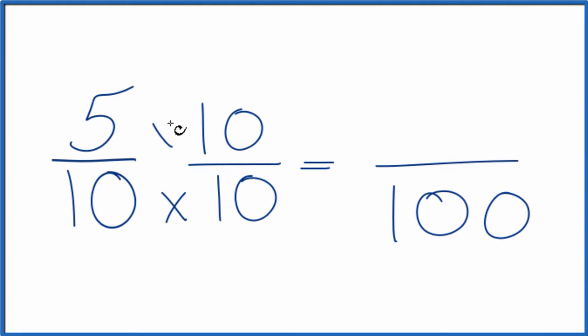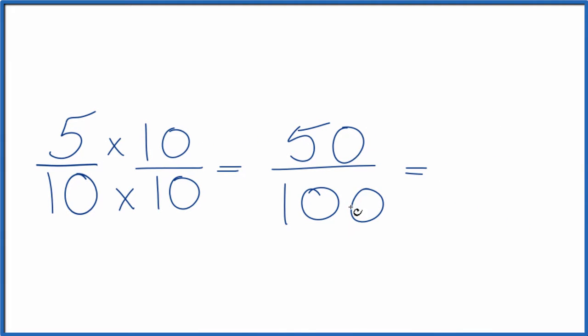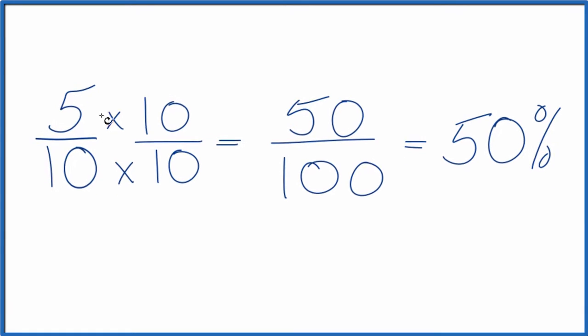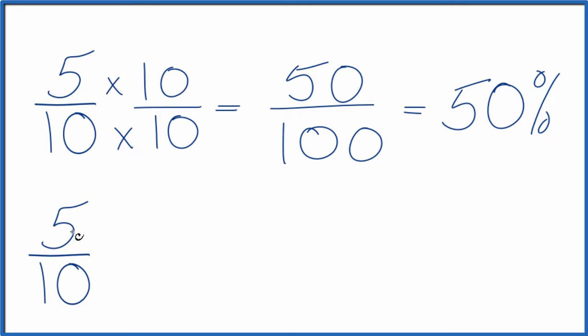5 times 10 is 50. So 5/10 and 50/100 are equivalent fractions. They have the same value, just represented differently. Because we have a number over 100, we can call this 50%. The other way to do this is to take 5/10 and divide 5